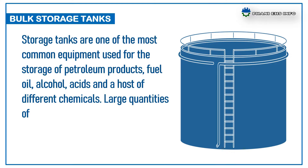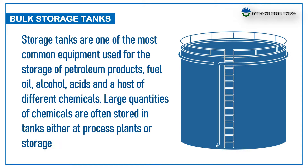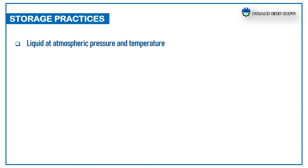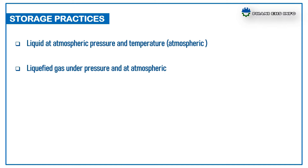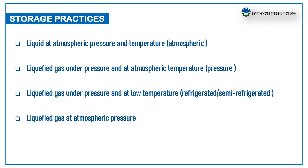Large quantities of chemicals are often stored in tanks either in process plants or storage terminals. Some of the storage practices in industries include: liquid at atmospheric pressure and temperature, which means atmospheric storage; liquefied gas under pressure and at atmospheric temperature, which means pressure storage; and refrigerated or semi-refrigerated storage.